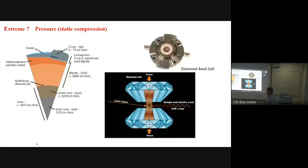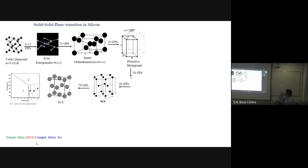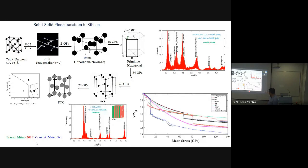From an experimental viewpoint, achieving those pressures requires specialized equipment. For silicon, we ran MD simulations and then computed virtual XRD patterns to identify which phases correspond to which crystallographic structures (beta-tin, etc.), thereby showing the transition pathway that matches experiment. This validated our simulation approach.